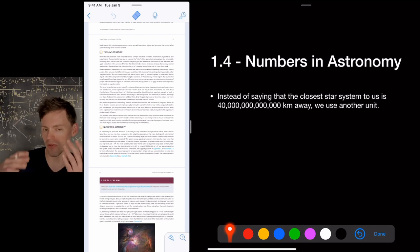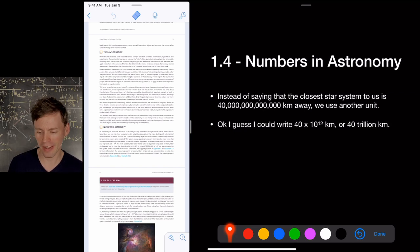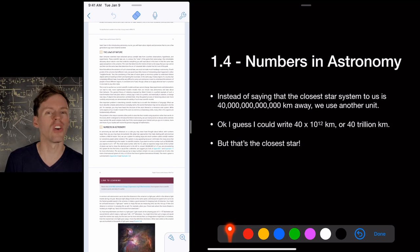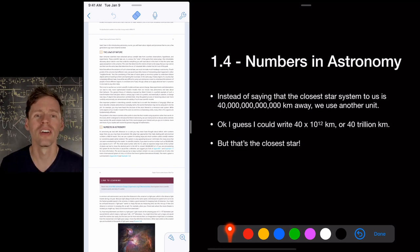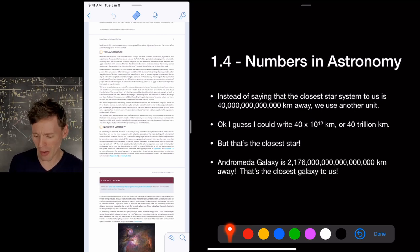We have another problem. So instead of saying that the closest star system, Alpha Centauri is 40 trillion kilometers away, we might want to use another unit. Okay. We could write it as 40 times 10 to the 12th or 40 trillion kilometers. That's still annoying. That's the closest star. Well, if we're going to talk about things further away than the closest star to us, we're going to have a lot of zeros after this. Andromeda galaxy is 2.176 this many kilometers away from us. That's the closest galaxy. Okay. You can see how this is going to get out of control. So we have a problem.